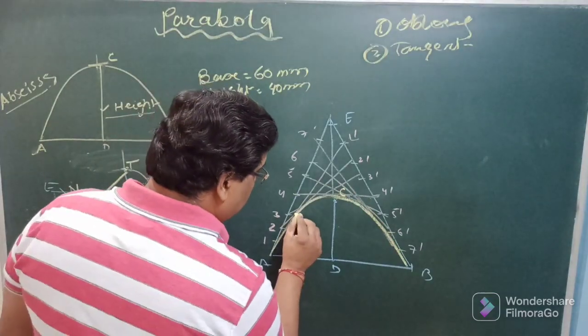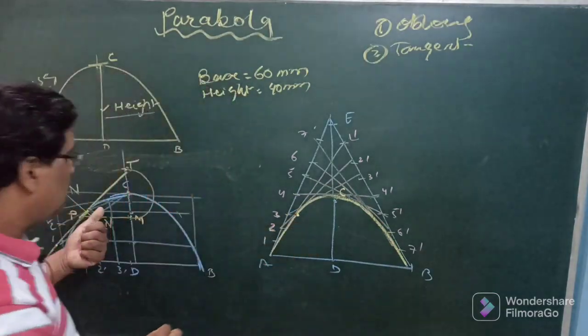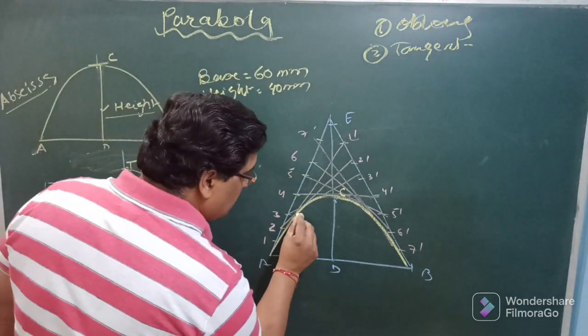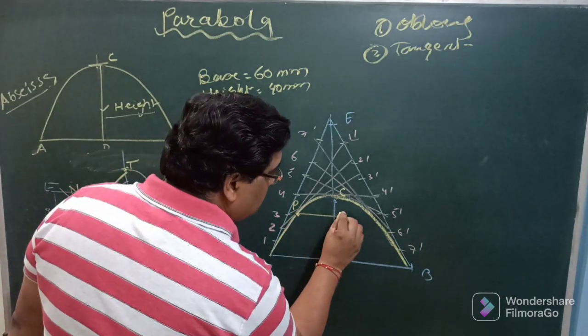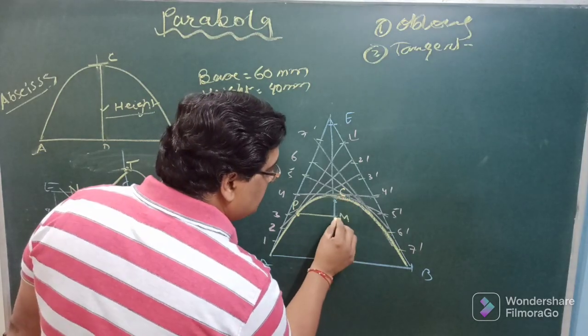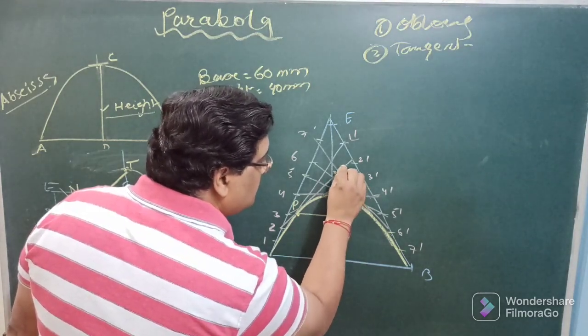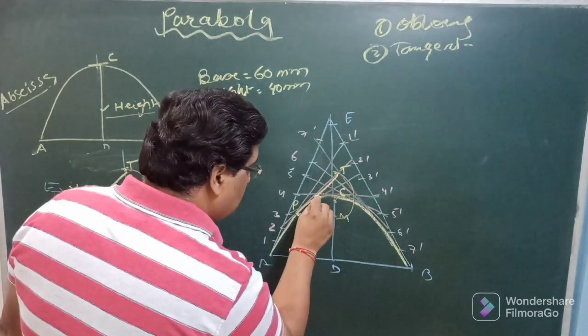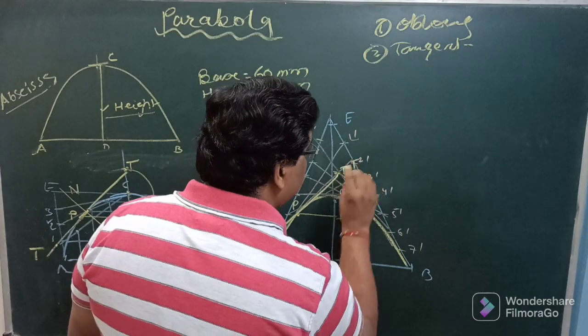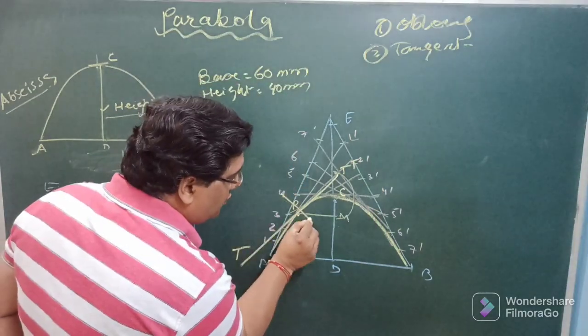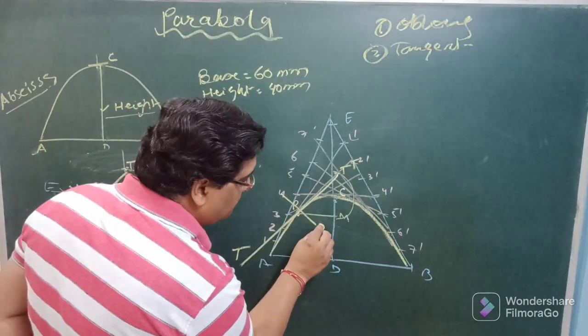For drawing tangent and normal this method will be used. So take up any point on the curve, draw a horizontal line to get M, take C as center, cut this side to get T point. Again join this T with the point P, that will be tangent and a perpendicular on P at this tangent will be the normal.